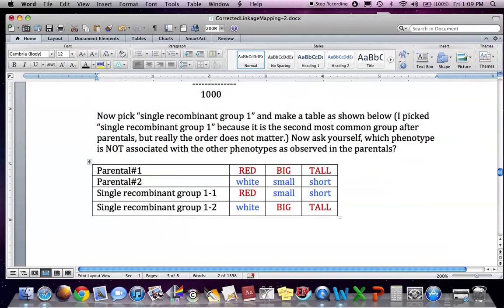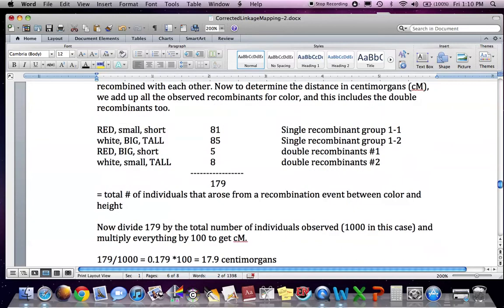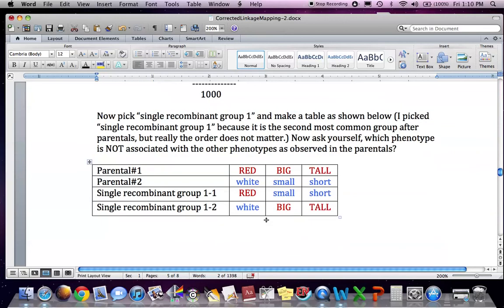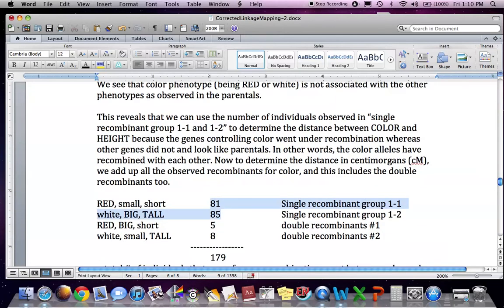So we just pick the single recombinant group one and we make the little table. Added color to make it pop. And we could see, you just kind of visualize and look and see what gene is not segregating with the parentals. So big and tall are together, small and short are together. That's normal. But then they're red and white. Oh, it's flip flop. So these guys must be recombining. Therefore, we add up these guys there. So the gene that controls coloration must be recombining. And that's where you get the numbers from there.